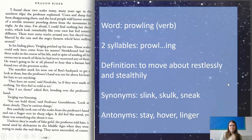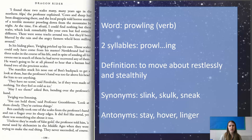"I found these two scales many, many years ago in the Northern Alps," the professor explained. "Cows and sheep had been disappearing there." Now I remember reading from yesterday's lesson that Nettlebrand said he was sick and tired of cows and sheep — and obviously, he'd been eating them. So now we're starting to think that maybe the story is about Nettlebrand. "And the local people told horror stories of a terrible monster prowling down from the mountains at night."